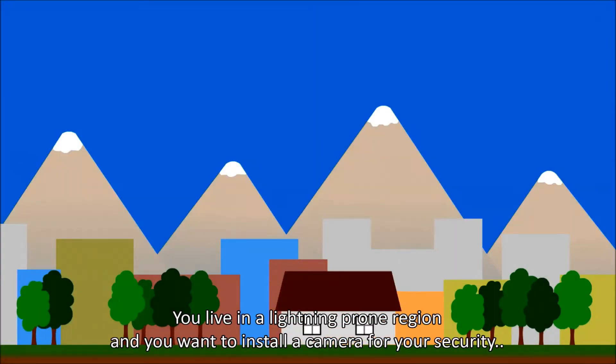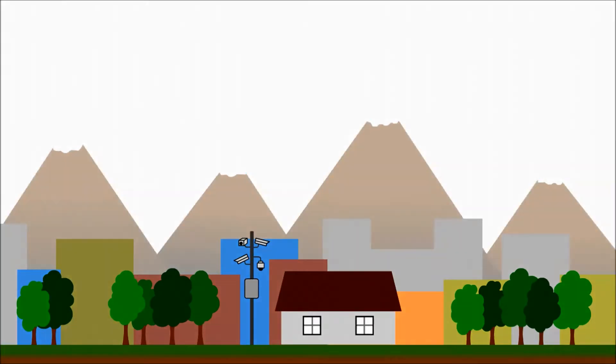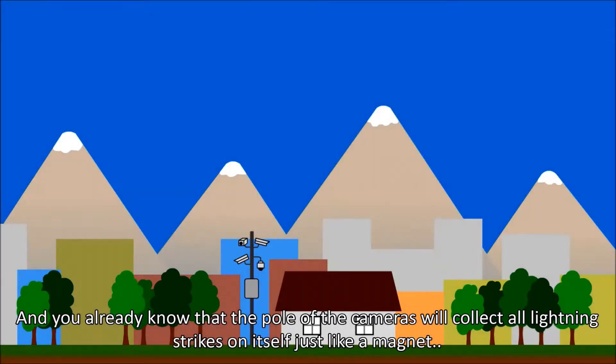You live in a lightning-prone region and you want to install a camera for your security. And you already know that the pole of the cameras will collect all lightning strikes on itself, just like a magnet.